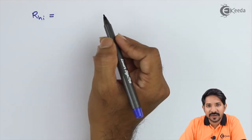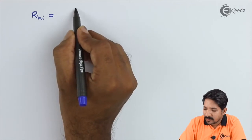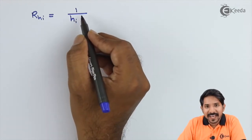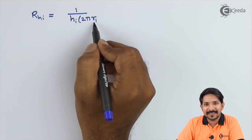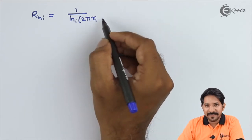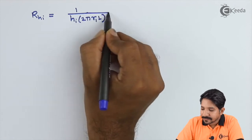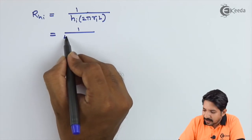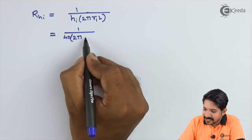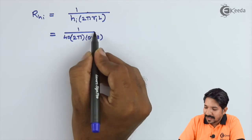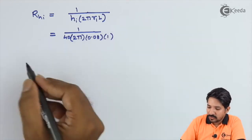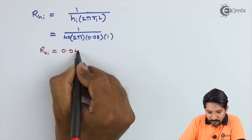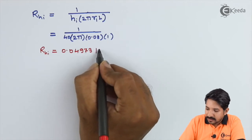First, finding RHI — the thermal resistance offered by the steam. The formula is 1 / (HI × Area), where Area = 2π·r1·L. Substituting: HI = 40, r1 = 0.08 m, L = 1 m. Therefore RHI = 1 / (40 × 2π × 0.08 × 1) = 0.04973 K/W.